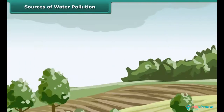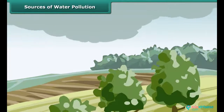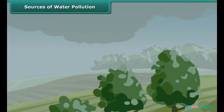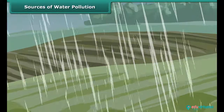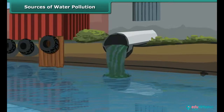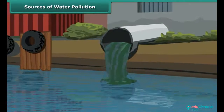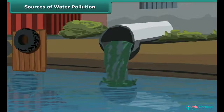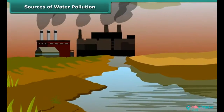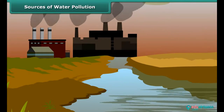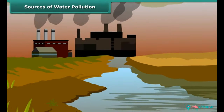Pollution enters a water body as acid rain, eroded soil, and runoff containing fertilizers and pesticides, as well as chemicals released from industries and other ways from cities and towns. Chemicals released from industries like arsenic, lead and fluorides lead to toxicity in plants and animals.